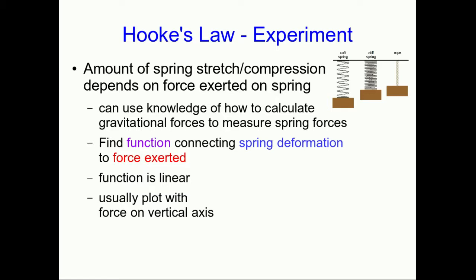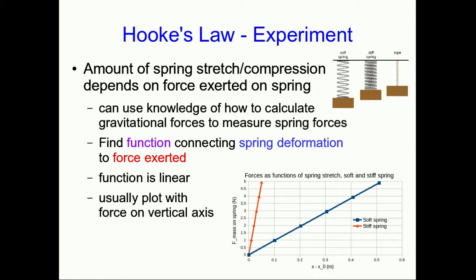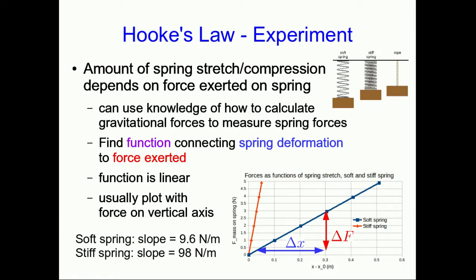But I've been plotting that with the forces on the horizontal axis. That's because the forces were under my direct control, so it made sense to think of them as the independent variable. But we usually plot these with the force on the vertical axis for reasons that you'll see. So plotting it up that way, it looks like this, with the stiffer spring having a steeper slope on the force versus displacement graph.